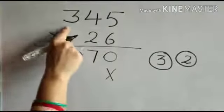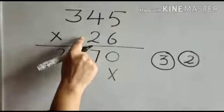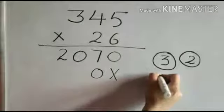Now we have to multiply 345 by 2. Let's start. 2 times 5 is 10. 0 here, 1 carry here.